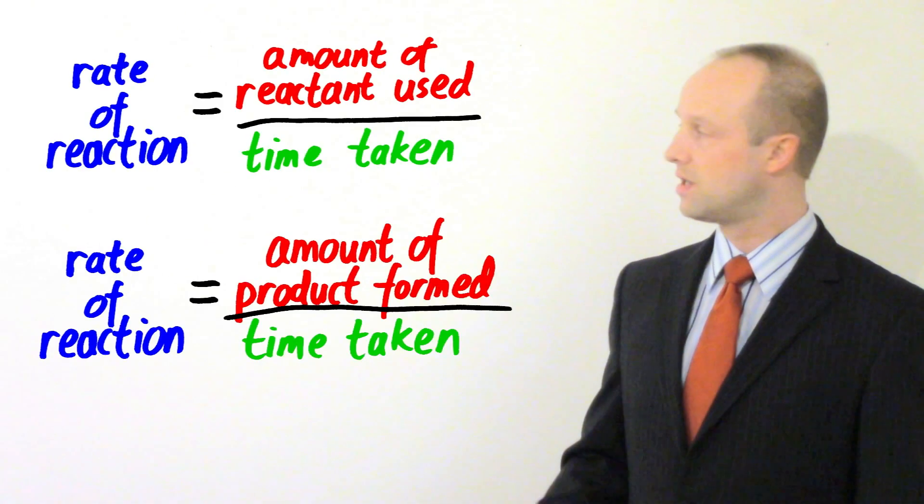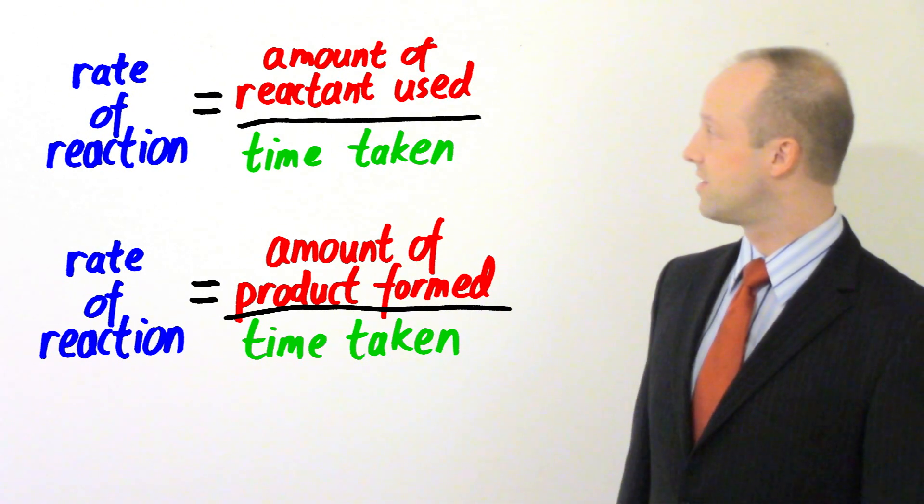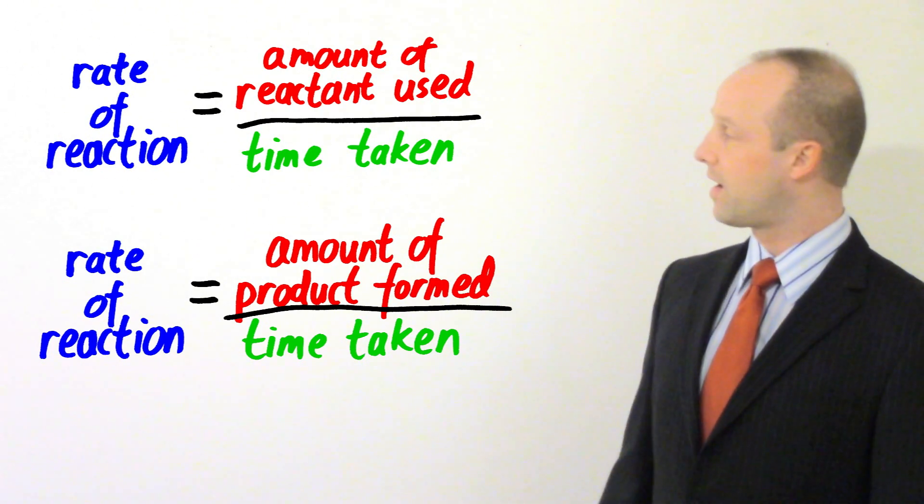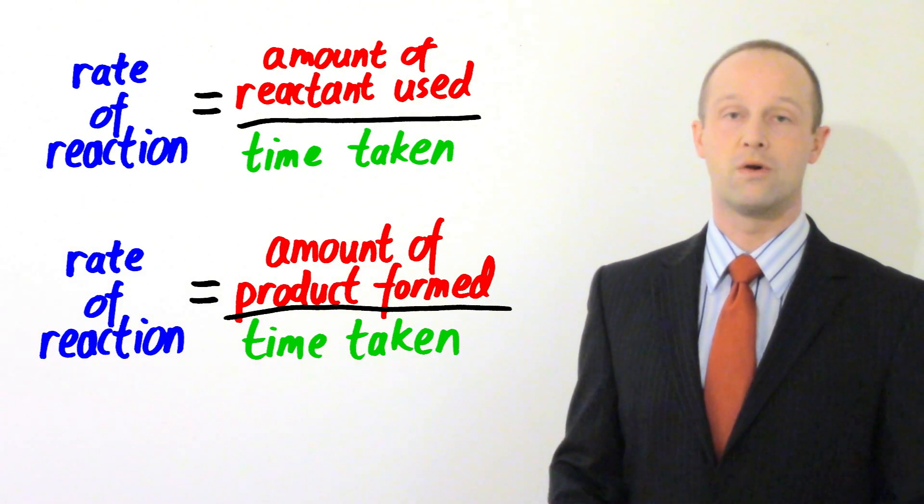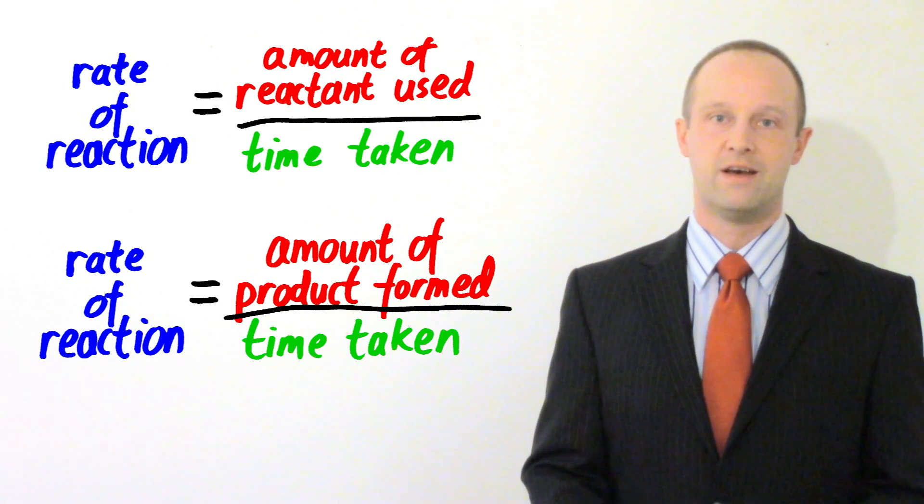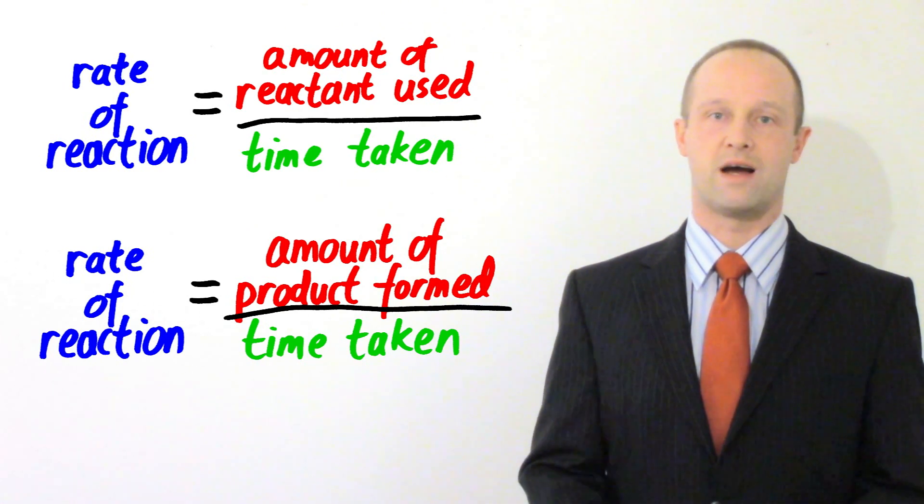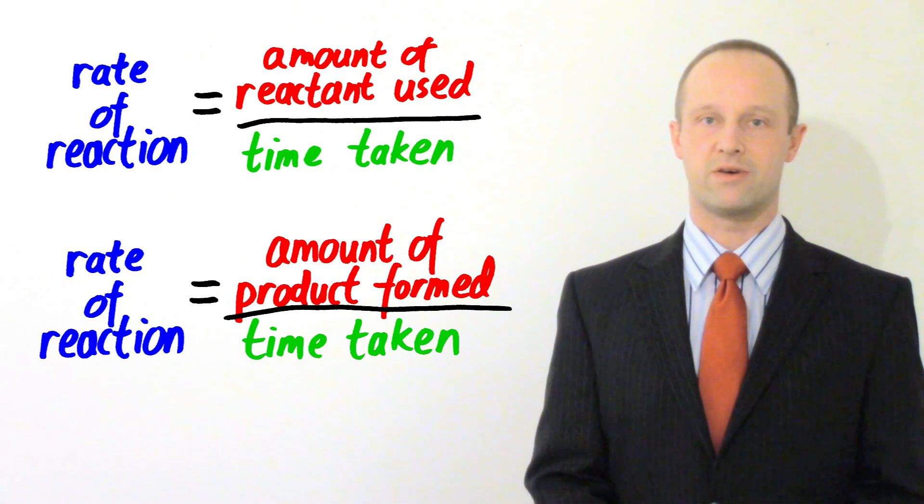And so you've got two equations which are pretty much the same sort of thing. You can either get rate of reaction is amount of reactant used divided by time, or you can get rate of reaction is amount of product formed divided by time. So you're always dividing by time, and that's true for any rate calculation. Now that might be time in minutes, it might be time in seconds, it might be time in hours, and it doesn't really make a difference. You're doing the same calculation each time.